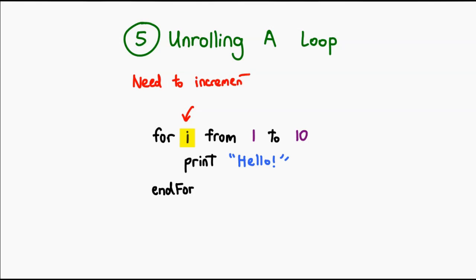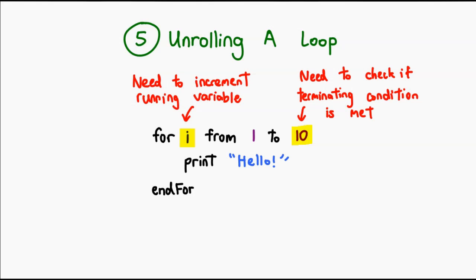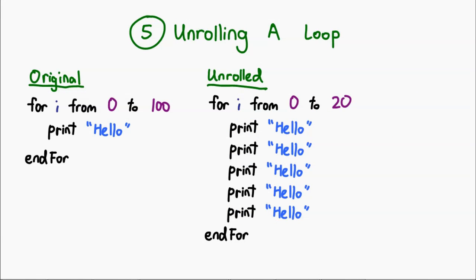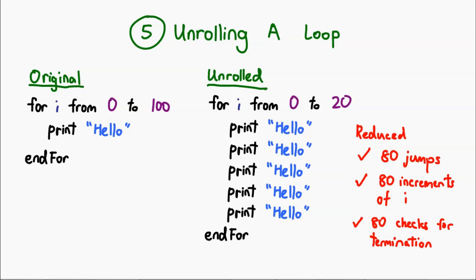Unrolling a loop also gets rid of some overhead associated with loops. Examples of these include having to check the condition to see if a loop should terminate, or the arithmetic associated with incrementing the loop parameter. You don't even have to unravel a loop completely. For example, if you have something that loops a hundred times, if you duplicate the statement just five times over, you've reduced the number of iterations down to 20. And you've actually gotten rid of 80 of those jumps. So that is a huge improvement in and of itself, despite the fact that you didn't get rid of the entire loop.